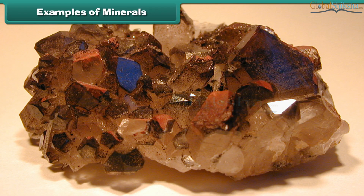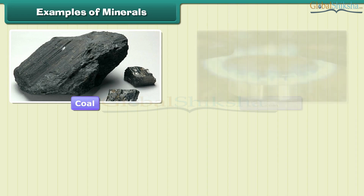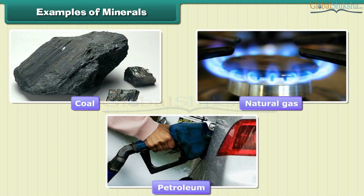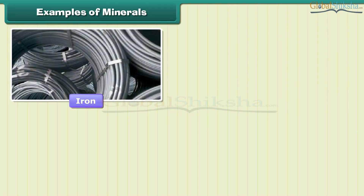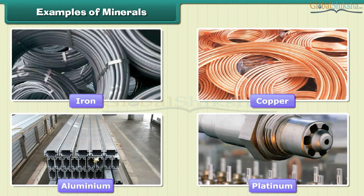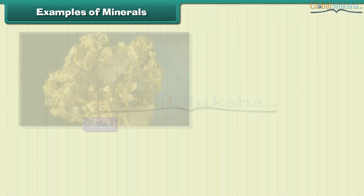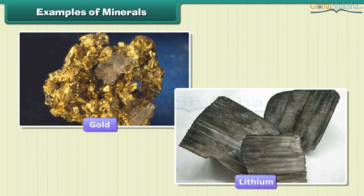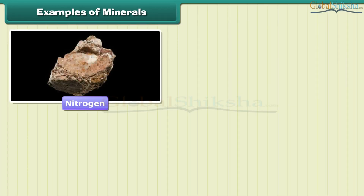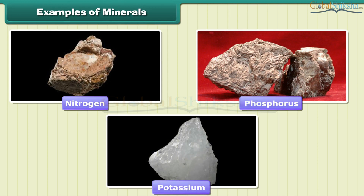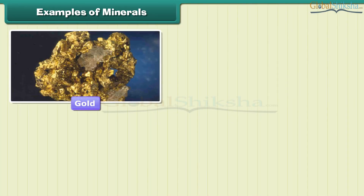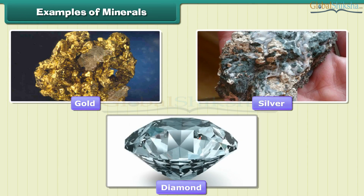Minerals are very important to humankind. Some minerals are used as fuels — for example, coal, natural gas, and petroleum. Some are used in industries, like iron, copper, aluminum, and platinum. Minerals like gold and lithium are used in medicines. Nitrogen, phosphorus, and potassium are used in fertilizers. Gold, silver, and diamond are used in jewelry.